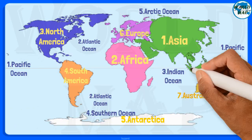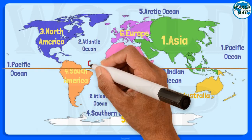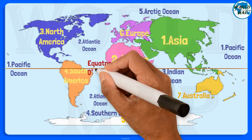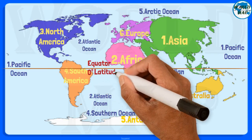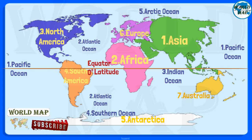Equator. The equator is a circle of latitude that divides a spheroid, such as Earth, into the northern and southern hemispheres. On Earth, the equator is an imaginary line located at zero degrees latitude, about 40,075 kilometers in circumference, halfway between the north and south poles.